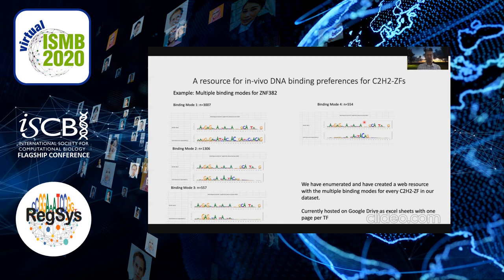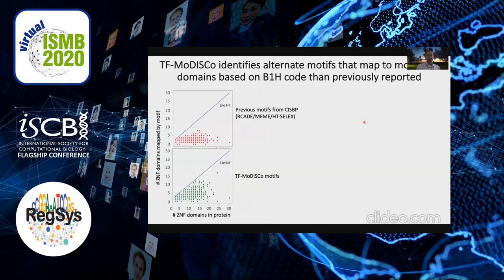We're going to create a website and host all of these motifs. To summarize what these results mean: on the y-axis is the number of zinc finger domains mapped to bind DNA in at least one of our motifs per transcription factor, and on the x-axis is the total number of zinc finger domains. Looking at the set of motifs currently in CIS-BP, the motifs out there do not seem to be using all of the zinc fingers available.